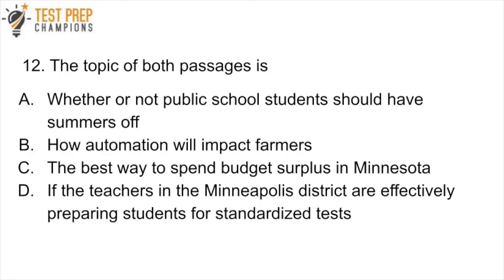Question 12: The topic of both passages is — A. Whether or not public school students should have summers off? B. How automation will impact farmers? C. The best way to spend the budget surplus in Minnesota? Or D. If the teachers in the Minneapolis district are effectively preparing students for standardized tests? Pause the video, refer back to both passages as needed, and try to answer this question. The answer is C. In the first passage the author argues that at least some of the extra money should go to paying higher teacher salaries, whereas in the second passage the author argues that instead of spending it on public schools, it should be given to farmers and other workers. That's why C — the best way to spend the budget surplus — is the topic of both passages.